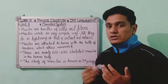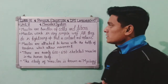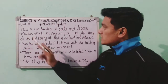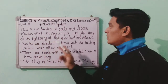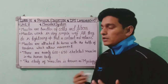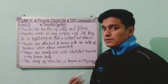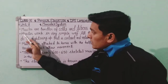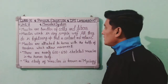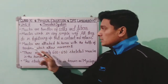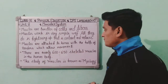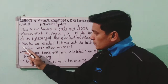First, the introduction of the muscular system. Muscles are bundles of cells and fibers. Muscles work in a very simple way — all they do is tighten up, that is, contract and relax.